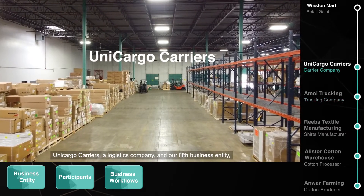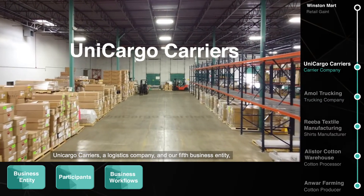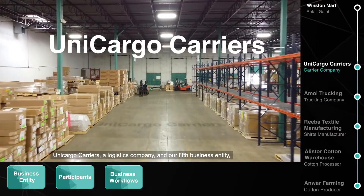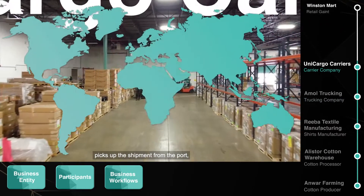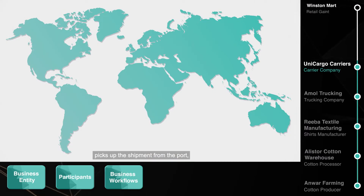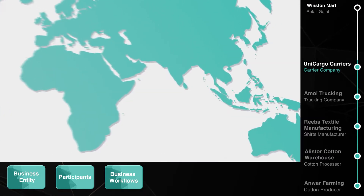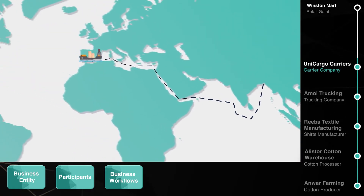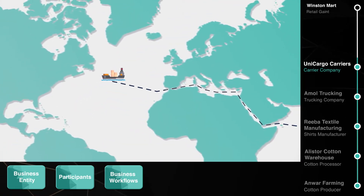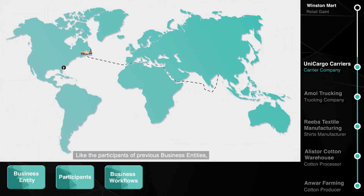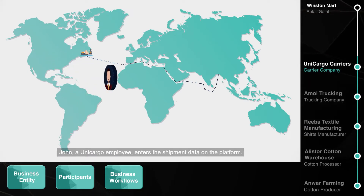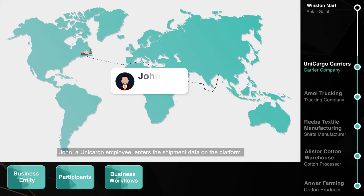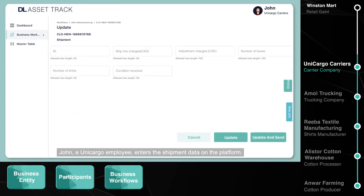Unicargo Carriers, a logistics company and our fifth business entity, picks up the shipment from the port and transports it across seas straight to Canada. Like the participants of previous business entities, John, a Unicargo employee, enters the shipment data on the platform.